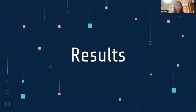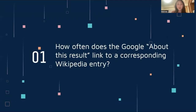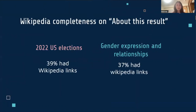Now, with all the Wikipedia and Wikidata information on the domains appearing on Google search, we can answer our original research questions. Recall that the first question we asked was: how often does the Google About This Result link to a corresponding Wikipedia entry? It turns out Wikipedia's coverage of web domains appears to be low. In particular, for queries related to the 2022 US elections, only 39% of search results had Wikipedia links.